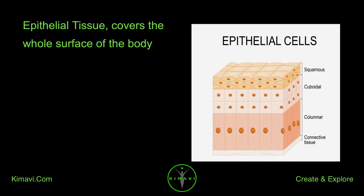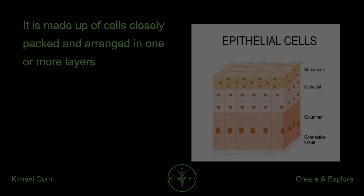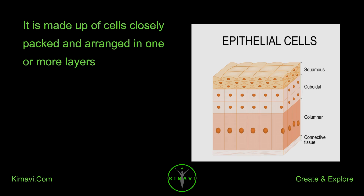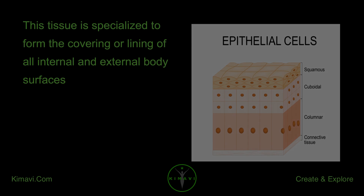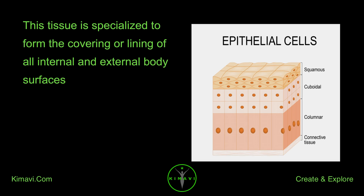Epithelial tissue covers the whole surface of the body. It is made up of cells closely packed and arranged in one or more layers. Epithelial cells are packed tightly together, with almost no intercellular spaces and only a small amount of intercellular substance. This tissue is specialized to form the covering or lining of all internal and external body surfaces.